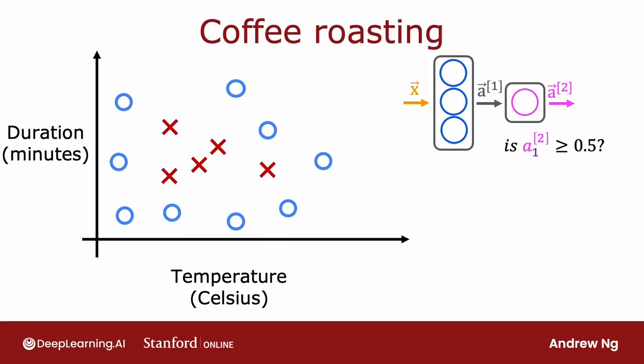When you're roasting coffee, two parameters you get to control are the temperature at which you're heating up the raw coffee beans to turn them into nicely roasted coffee beans, as well as the duration or how long you're going to roast the beans. And in this slightly simplified example, we've created the data sets of different temperatures and different durations, as well as labels showing whether the coffee you roasted is good tasting coffee.